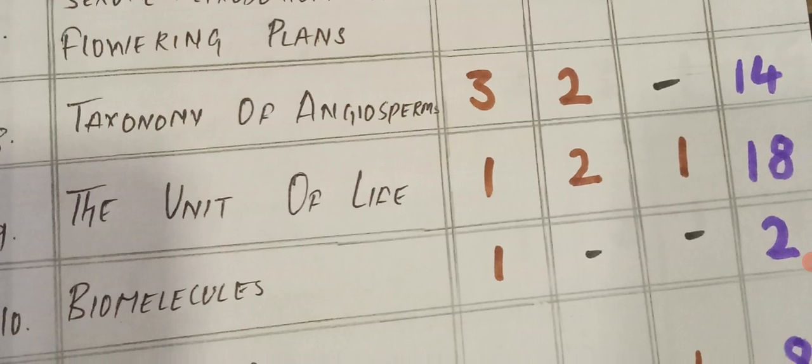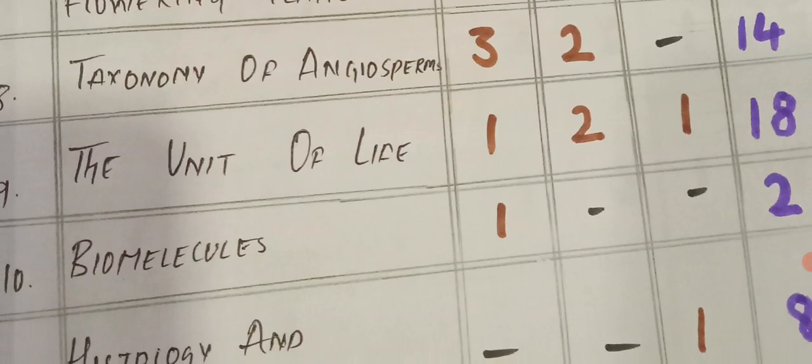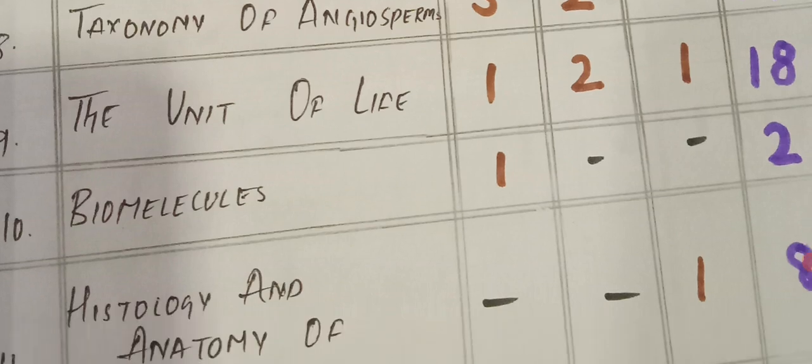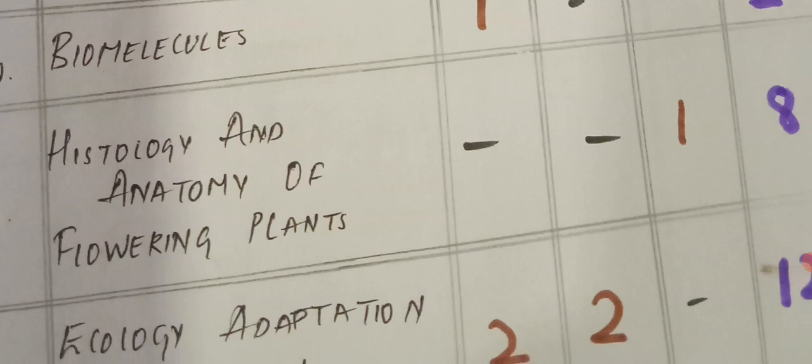Unit of life: 1 VSCQ, 2 SCQs, and 1 LAQ. Biomolecules: 1 VSCQ. Histology and anatomy of flowering plants: 1 LAQ, total 8 marks.